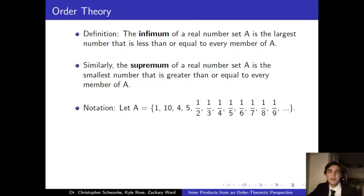As an example, let A be this set of real numbers that include 1, 10, 4, 5, and a decreasing sequence that approaches 0. Clearly, 10 is greater than or equal to every number in A, so it must be the supremum. Now, the infimum of A is 0 because while it is not in A, it is less than everything in A but is greater than any other lower bound, like for example, negative 1 or negative 10.